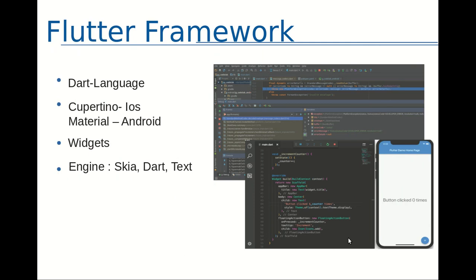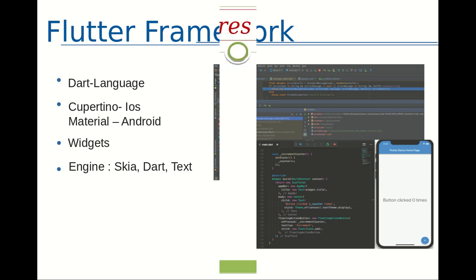To summarize the architecture: Dart is the programming language; Cupertino is the iOS-specific library and Material is the Android-specific library. Stateless and stateful widgets are supported. The engine includes Skia, Dart, and text rendering. During runtime, Dart enhances performance and allows hot reload to instantly reflect code changes.